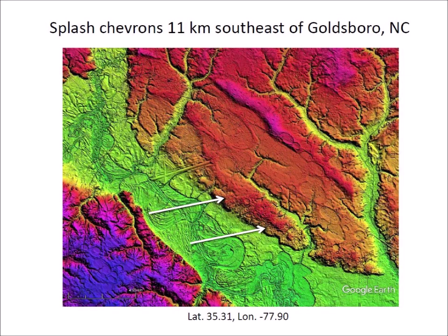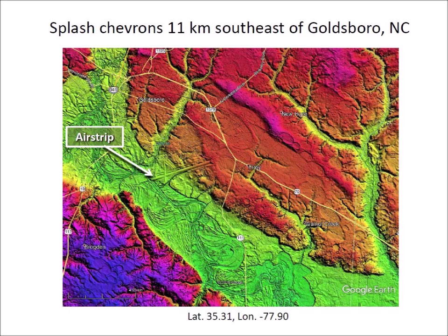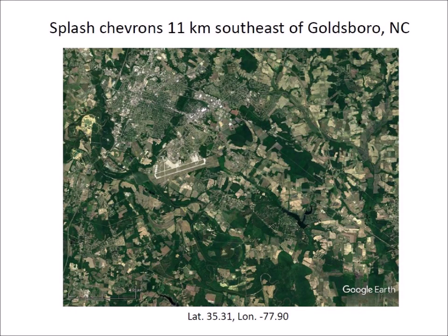Goldsboro, North Carolina is situated by the Neuse River. This LiDAR image shows the splash chevrons along the bank of the river. Once again, the chevron dunes are on the east bank of the river and they are pockmarked by small Carolina Bays. This image shows the location of the city, the roads, and an airstrip. The satellite image of the same area shows that urbanization uses all the land and the Neuse River has been constrained to a small channel.